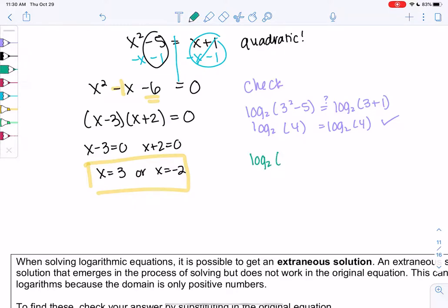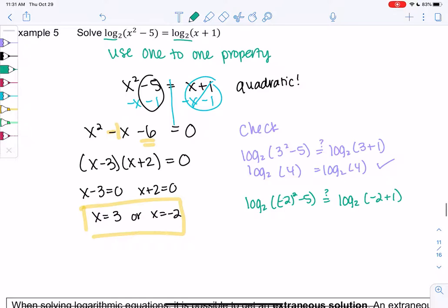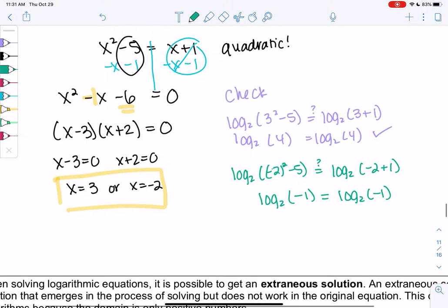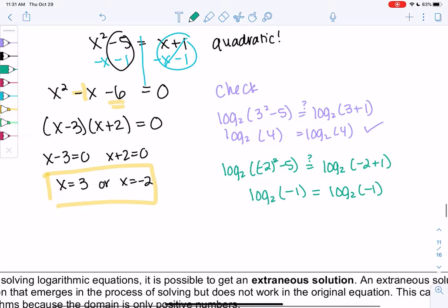Let's see what happens with negative 2. Log base 2 of negative 2 squared minus 5. Does it equal log base 2 of negative 2 plus 1? Just again plugging into the original equation. We get log base 2 of 4 minus 5, so negative 1. And log base 2 of negative 2 plus 1, which is negative 1. So they're equal to each other, but what's the issue? We learned that negative numbers are not in the domain of logs. So this is not in the domain. So this solution, although they match, it doesn't work.